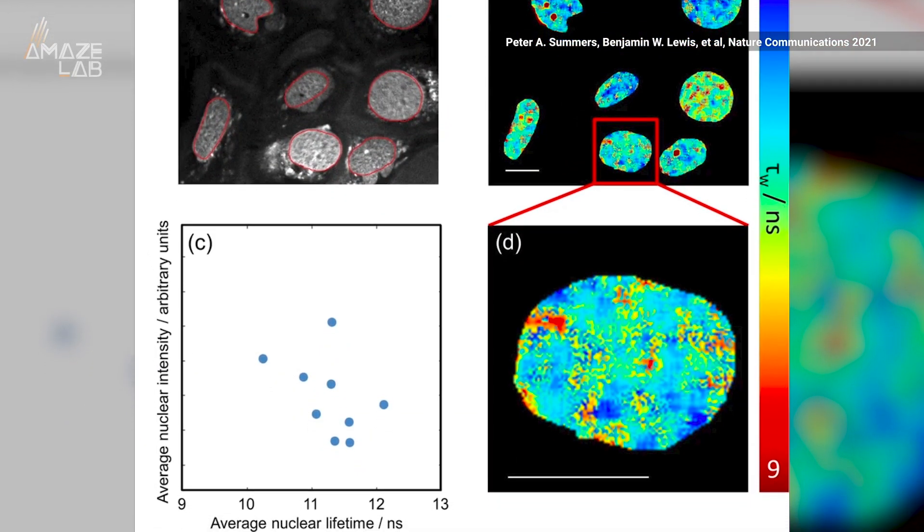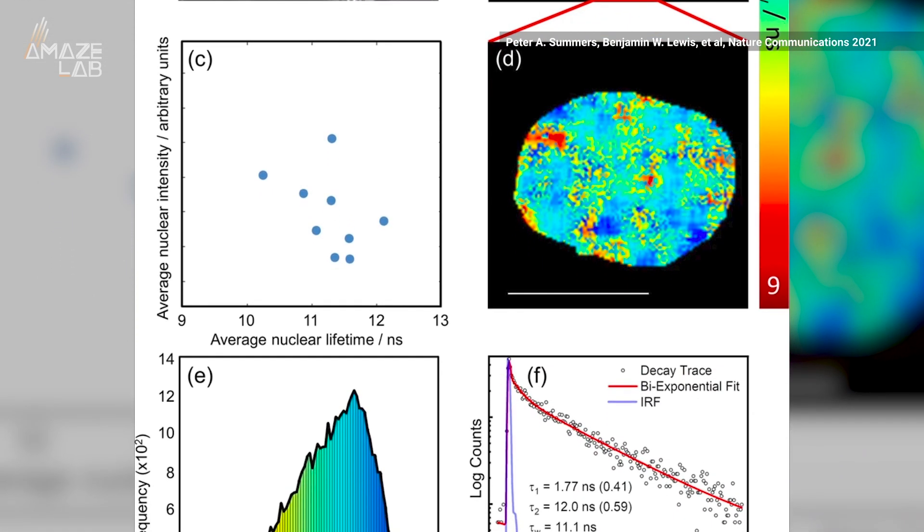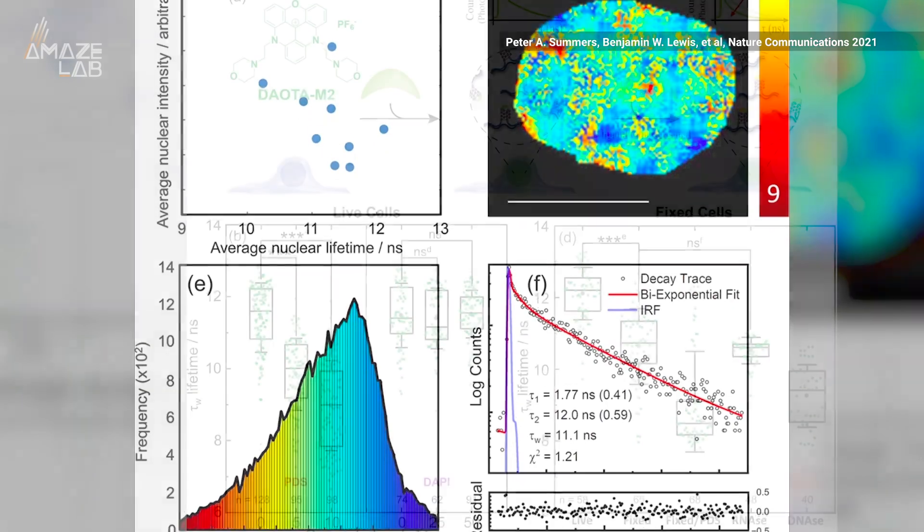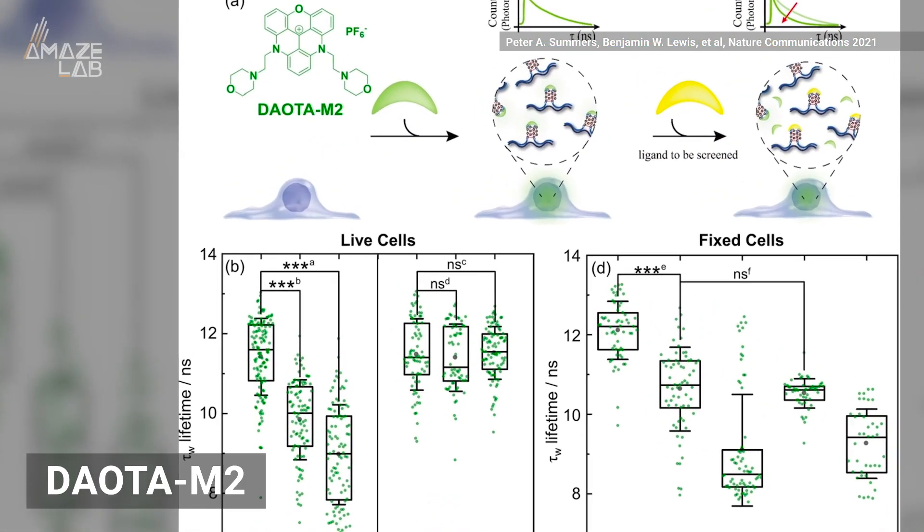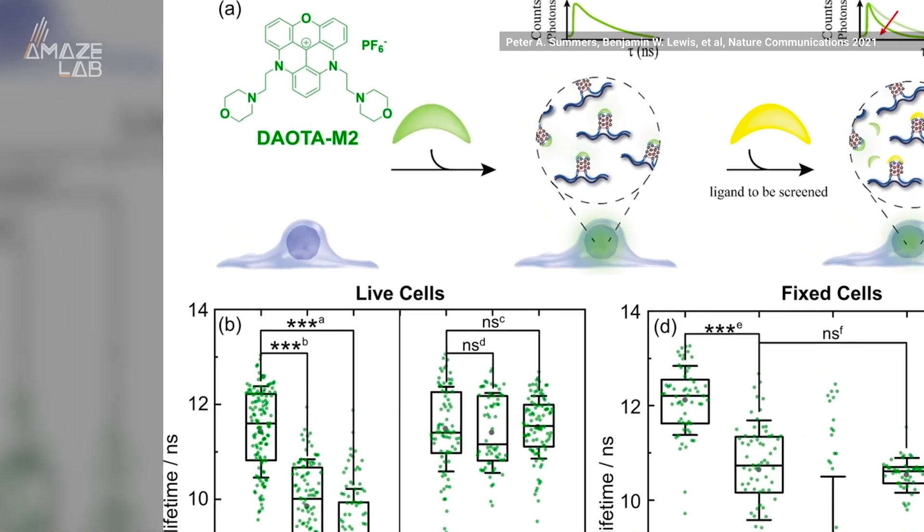Now scientists at Imperial College London have devised a way to detect and interact with four-stranded DNA by shining a light, so to speak. The team used a chemical called DAOTAM2, which emits a fluorescent light when binding to four-stranded DNA.